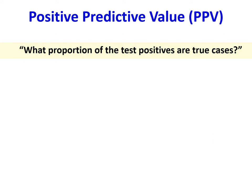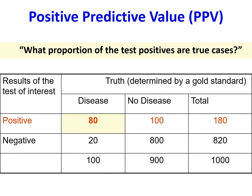Positive predictive value: what proportion of the test positives are true cases? Now we focus on the first row — those found positive by our test of interest, which is 180. Of them, 80 are true cases determined by the gold standard. So the positive predictive value is 80 divided by 180.